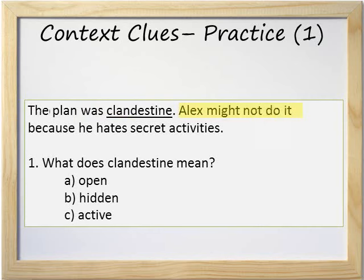Clue 1: Alex might not do it — this means Alex might not do the plan that's clandestine. The reason he might not do the clandestine plan is because he hates secret activities. So if Alex hates secret activities and therefore might not do the plan, that tells us the plan is a secret activity. Returning to question 1: What does clandestine mean? The meaning is similar to secret.